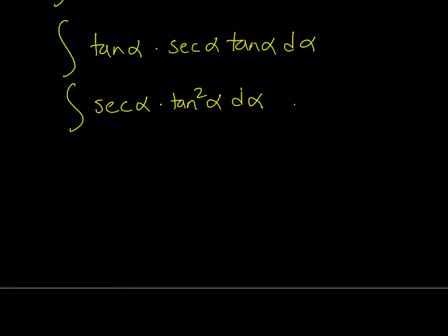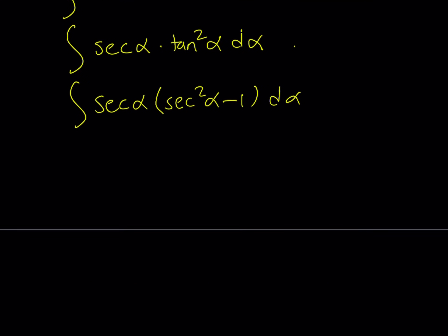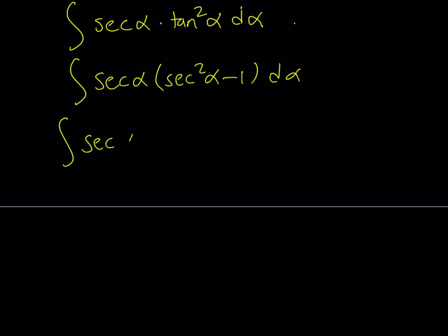Now we're going to solve this trigonometric integral. There is more than one way to do it, but I'd like to turn tangent squared into secant. So let's replace tangent squared with secant squared alpha minus 1, then distribute. This gives us secant alpha to the third power — by multiplying the first and second powers — minus secant alpha, all multiplied by d alpha.